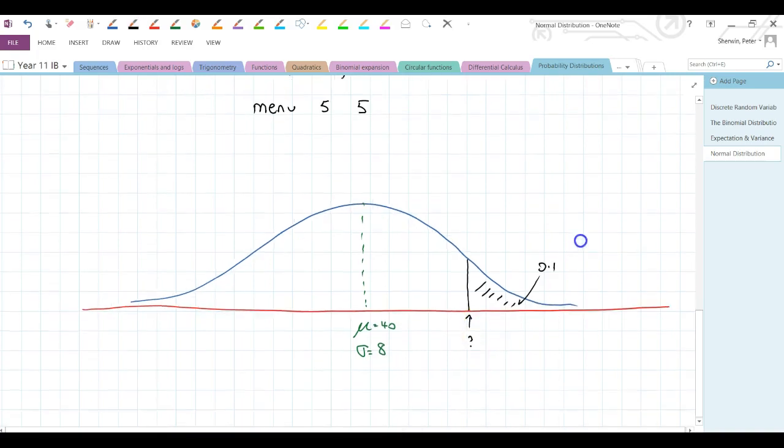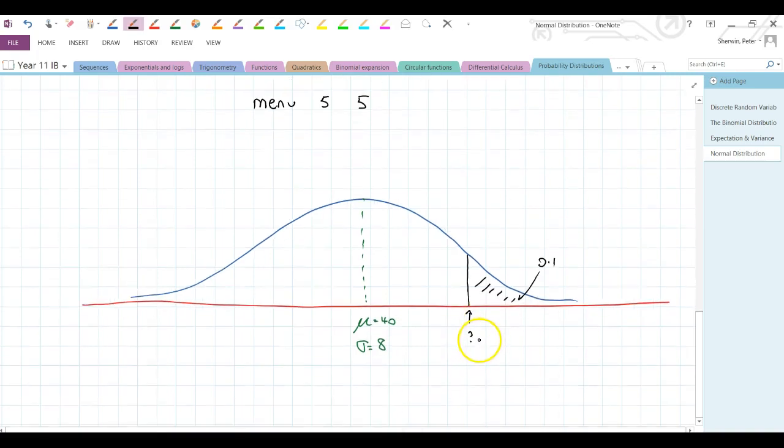So this value here is equal to 50.3. Does that make sense? 40 and 8, so it's just above one standard deviation. Yeah, that sounds about right. So with this information, mean 40, standard deviation 8, 10% of scores lie above 50.3. I got that through inverse normal.